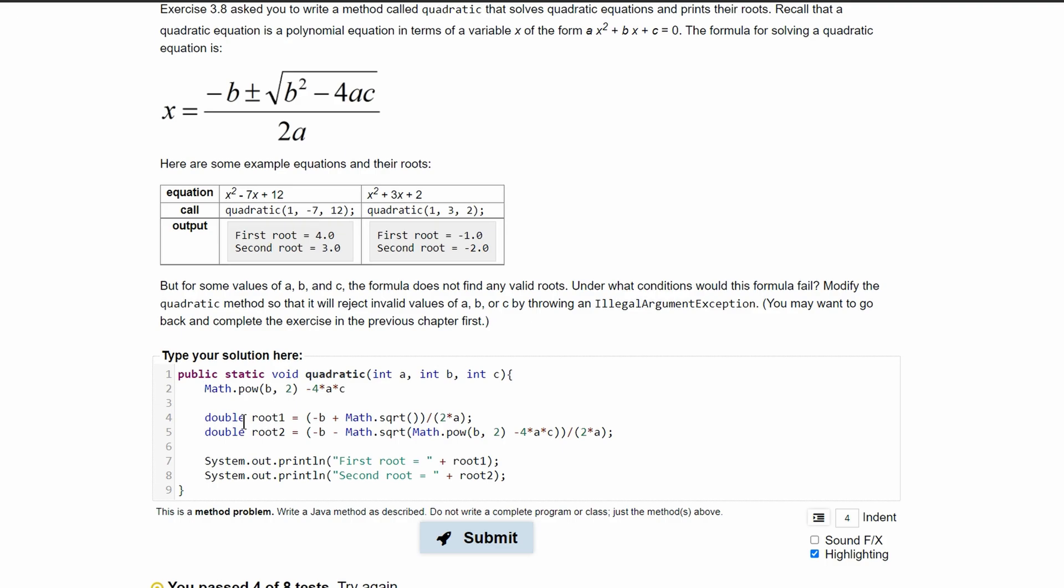We will have double and we can just call it square root and set it equal to math.pow, b squared, all of this stuff, which is the formula for everything inside of here.